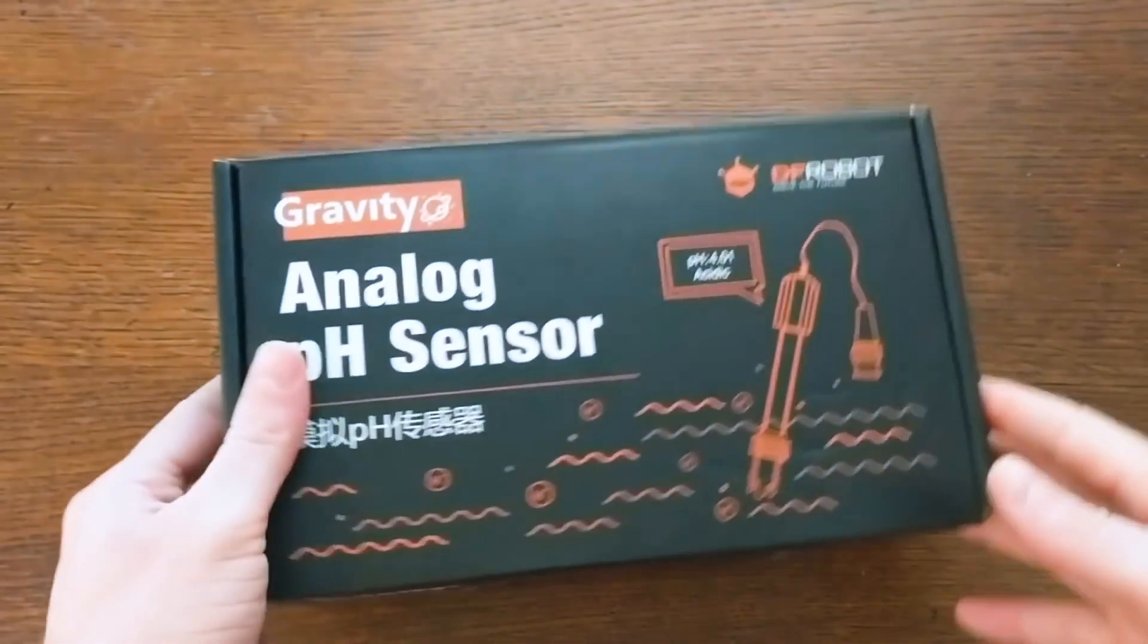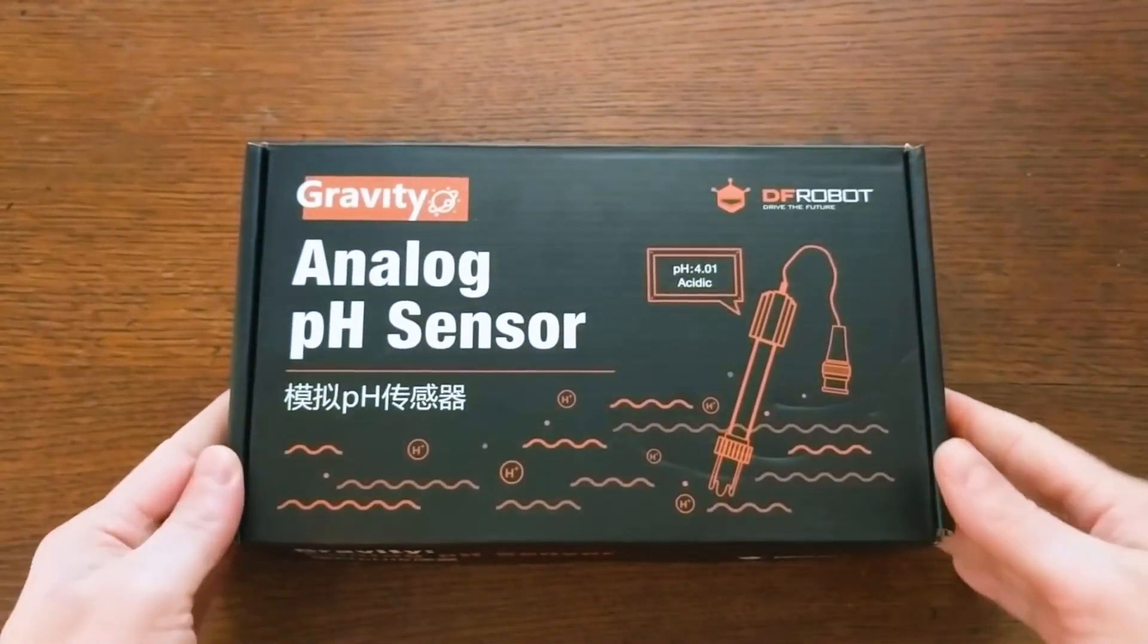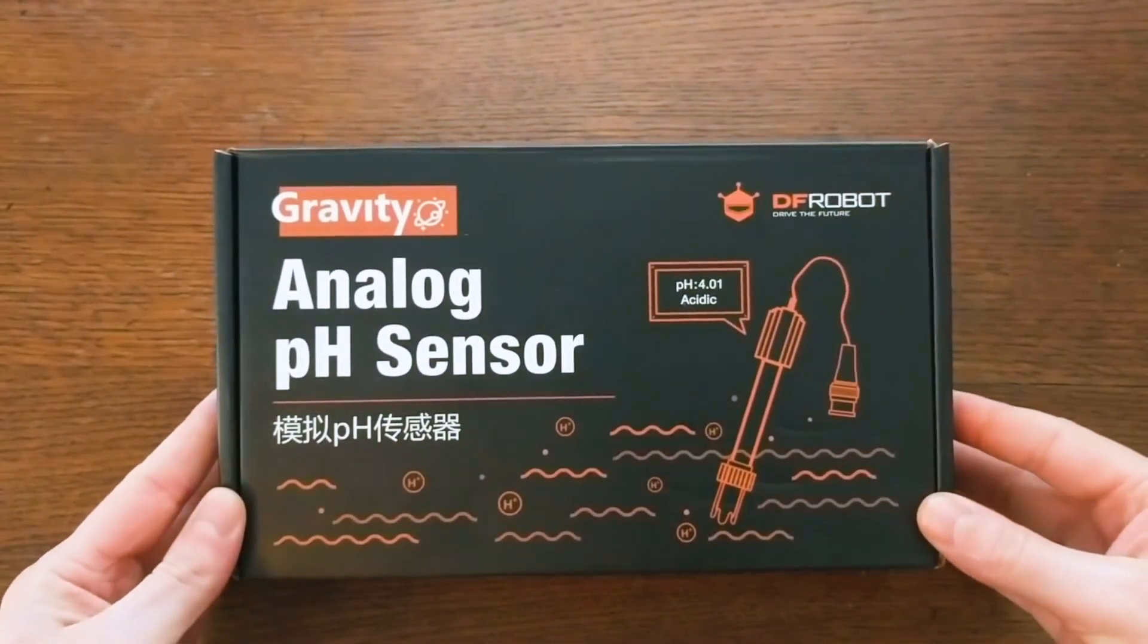Hey everyone, welcome back! In this video, I'll be testing out this analog pH sensor from the folks over at DFRobot. Like the name suggests, this device measures the pH of a solution and responds with an analog voltage to communicate that reading.